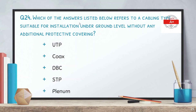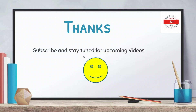Question 24: which of the answers listed below refers to a cabling type suitable for installation at underground level without any additional protection covering? Options are UTP, coax, DVC, STP, and plenum. The correct answer is DVC. That was all for today — I hope you learned something from this video. Please subscribe and stay tuned for the next upcoming video. Thank you all.